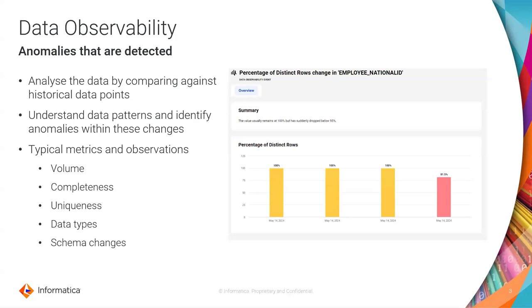Here in this example from our product, we had a specific column where we didn't create a rule looking at the number of distinct values. But based on the history that it always was 100% distinct, when it suddenly dropped, this is something that will be reported. You didn't have to create a rule for that — all of that is out of the box, automatically applied to the complete data set. In case it detects any anomalies, those anomalies will be reported.